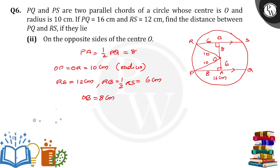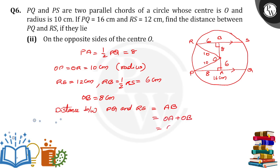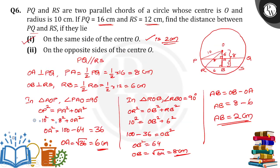The distance between PQ and RS is AB, which is OA plus OB since they are on opposite sides of center O. So AB = 6 + 8 = 14 centimeters. Therefore the distance between the two chords when they are on opposite sides of center O is 14 centimeters, and when on the same side it is 2 centimeters.